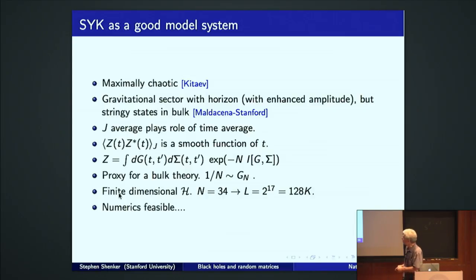Last, as I mentioned, the Hilbert space of this model, it's built out of fermions. It's finite dimensional. To pick a number out of the air, let's say you have 34 Majorana fermions. The dimension of this Hilbert space is about 128,000. Well, numerics are feasible now. We have no other obvious tools, but we can actually study this baby model of quantum gravity numerically. And that's what we started doing.